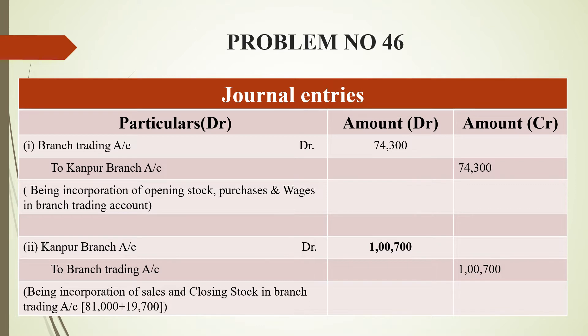If you have a total on the debit side of the branch account, then you will get 74,300. Since foreign and the types of jeans, you can enter the total on your account.